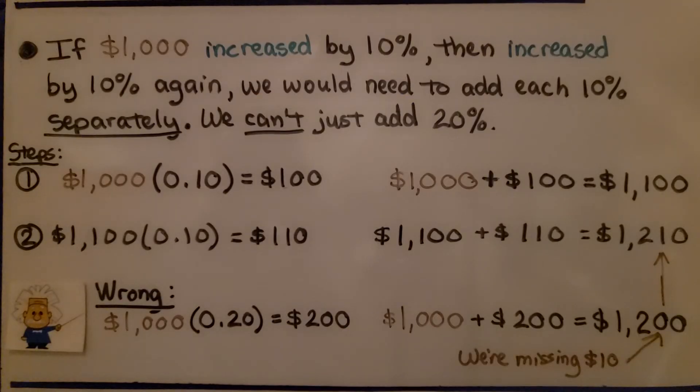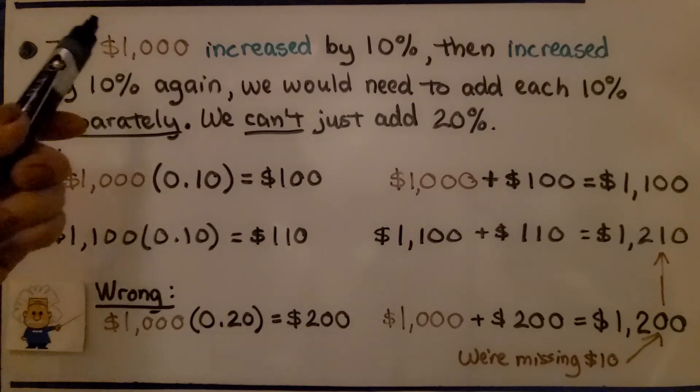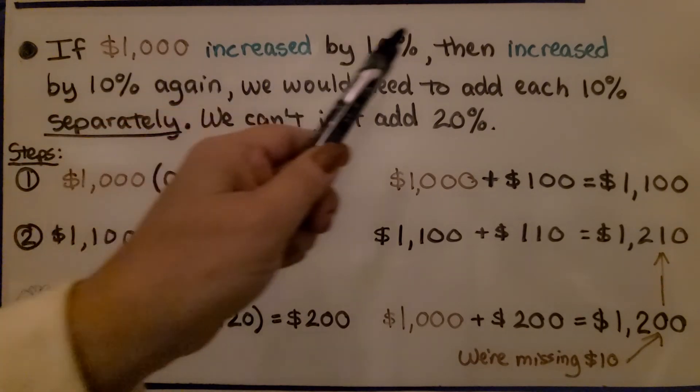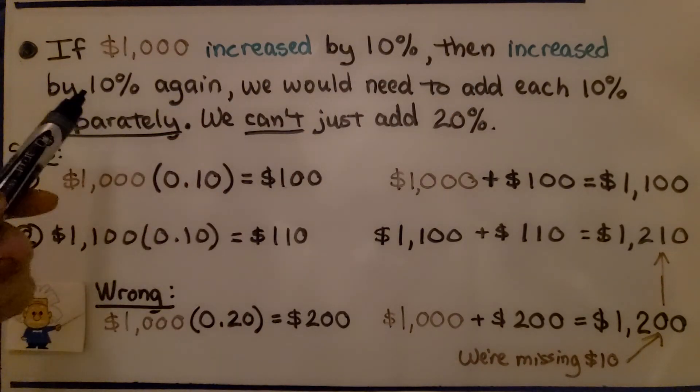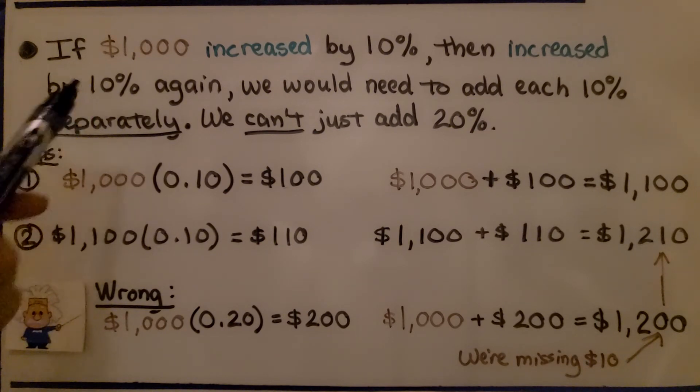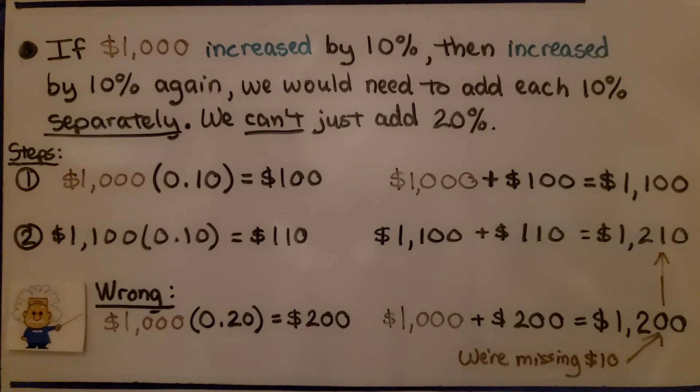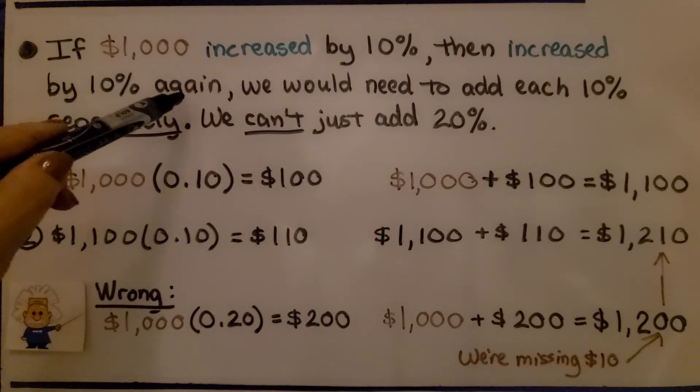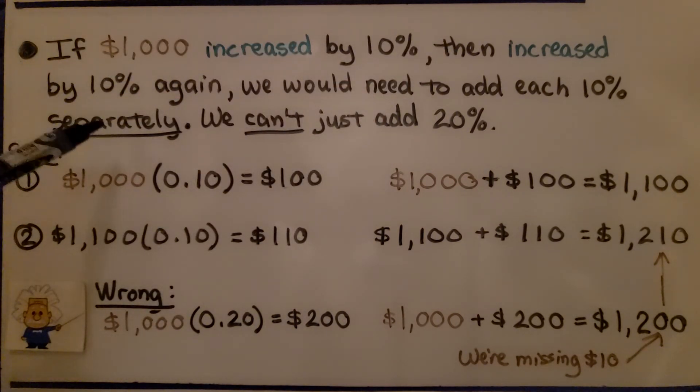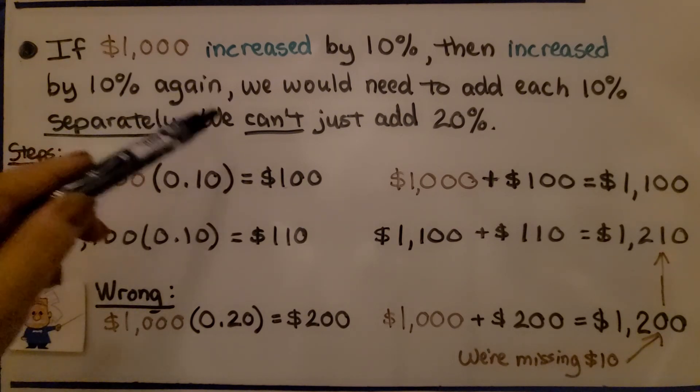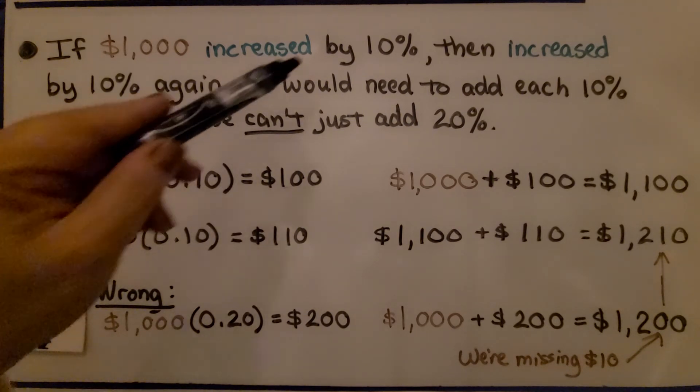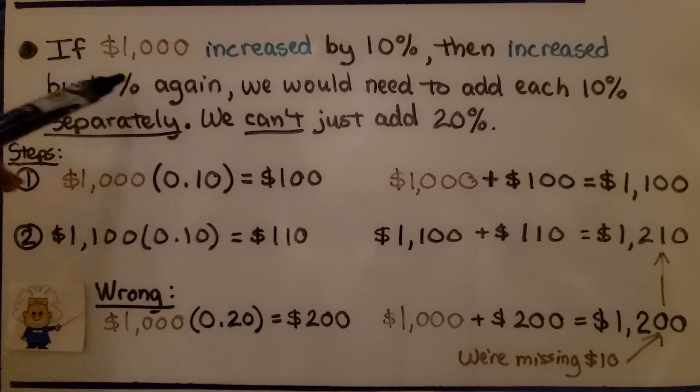Sometimes in problems, we'll need to find a percentage of increase or decrease, then find another percentage of increase or decrease. We need to add each change separately. If $1,000 increased by 10%, then increased by 10% again, we need to add each 10% separately. We can't just add 20%. We have 10% and 10%, we can't just add 20%. This is why.